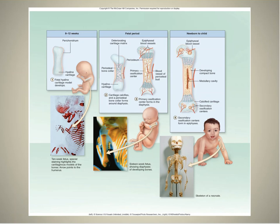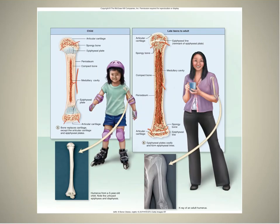Later on, there's a secondary ossification center in the epiphysis, and a continuing primary ossification center in the diaphysis, and both work at the same time. In the middle, we have cartilage that's growing that allows bones to grow longer.